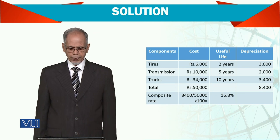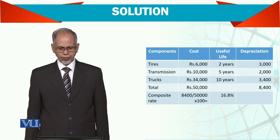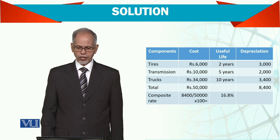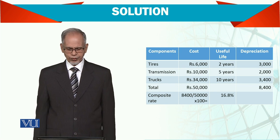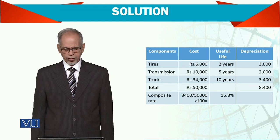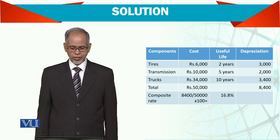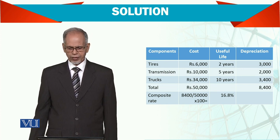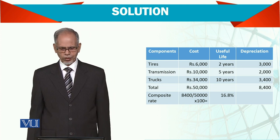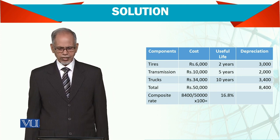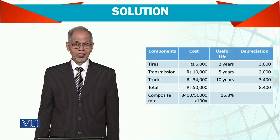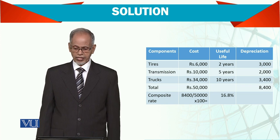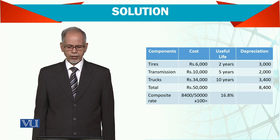Tires cost and life is 2 years, so depreciation per year is 3,000. Transmission cost is 10,000 with a life of 5 years, giving depreciation per year of 2,000. Truck body cost is 34,000 with a life of 10 years, so depreciation is 3,400 per year.